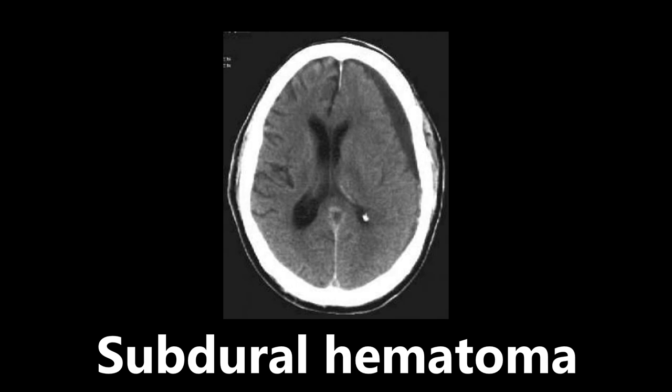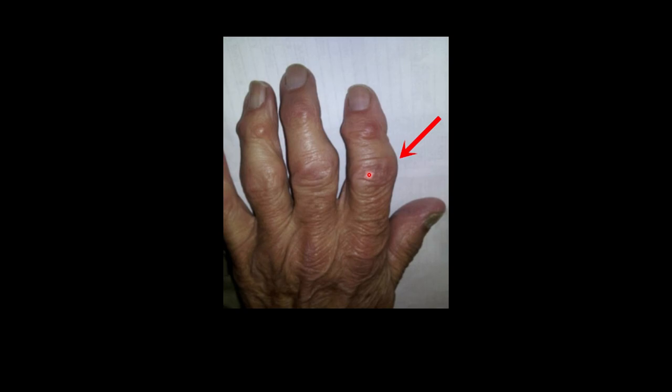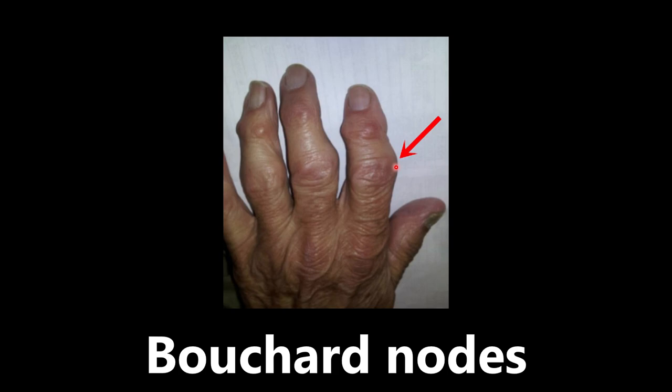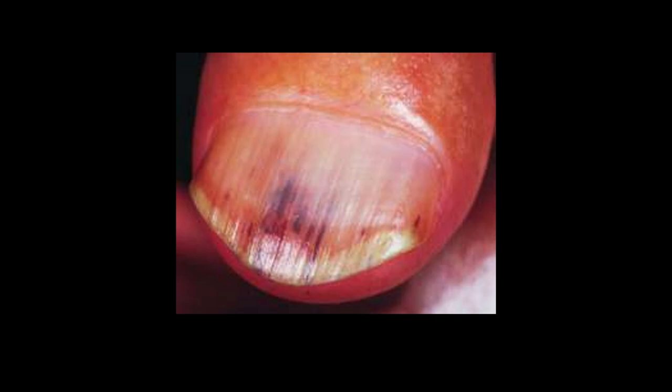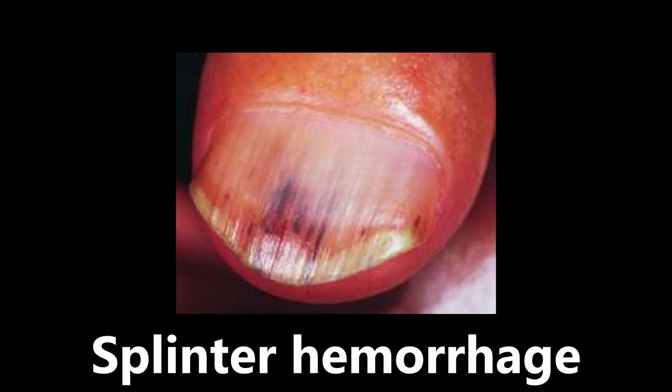This next image has a lovely arrow sign pointing at an abnormality — this is an example of a Bouchard node. These are osteophytes seen in the proximal interphalangeal joints of the fingers. They're swollen, bony bumps that can cause a lot of rigidity, pain, and immobility, and the condition associated with Bouchard nodes is osteoarthritis. Next, we're seeing splinter hemorrhages on the fingernails, which are seen in bacterial endocarditis.